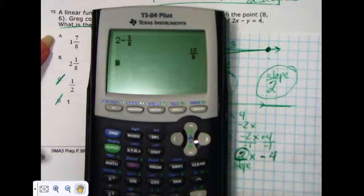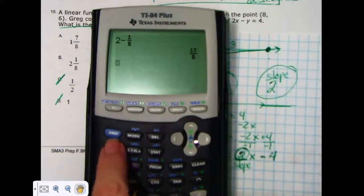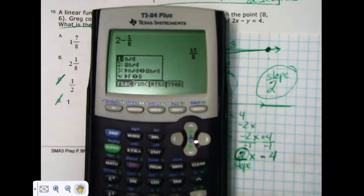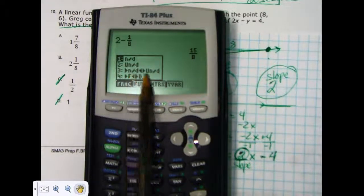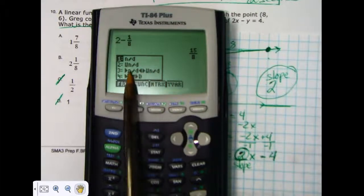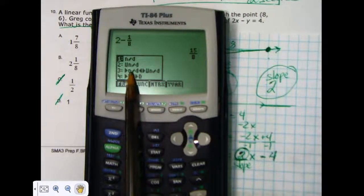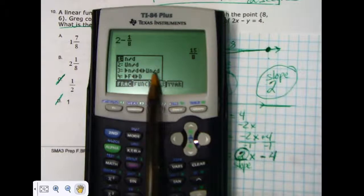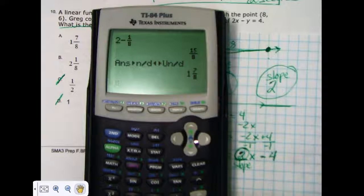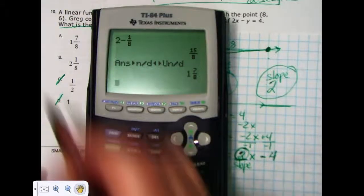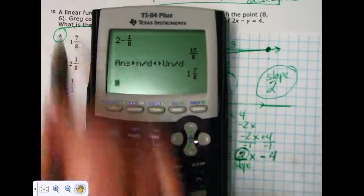Now, my calculator, because I get to use the calculator on this part, it will help me. I can use my fraction menu, go alpha y equals, and my calculator, yours too, will change that fraction to a mixed number with the selection of number 3. It takes a regular fraction and changes it to a mixed number, and if I choose that, I see that it's 1 and 7/8. And that is my answer.